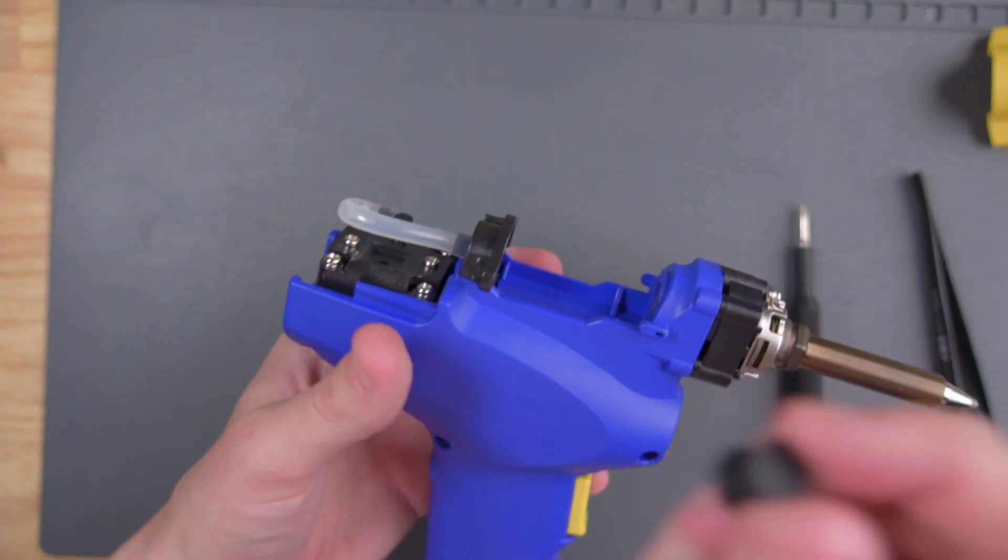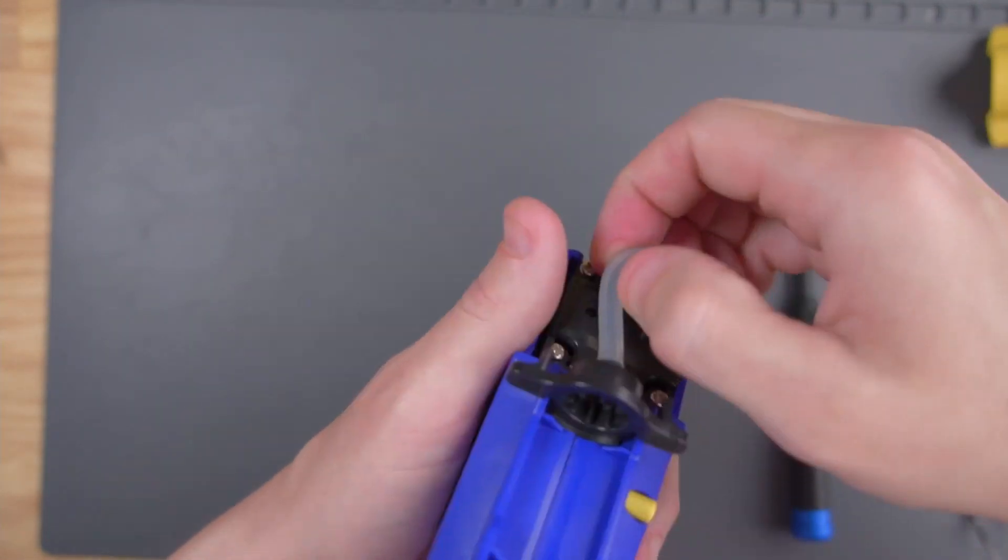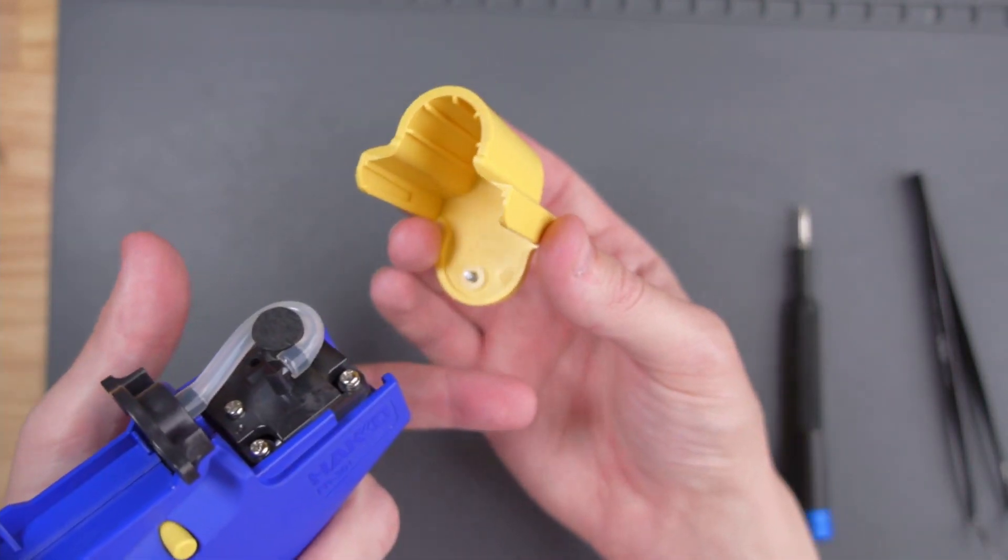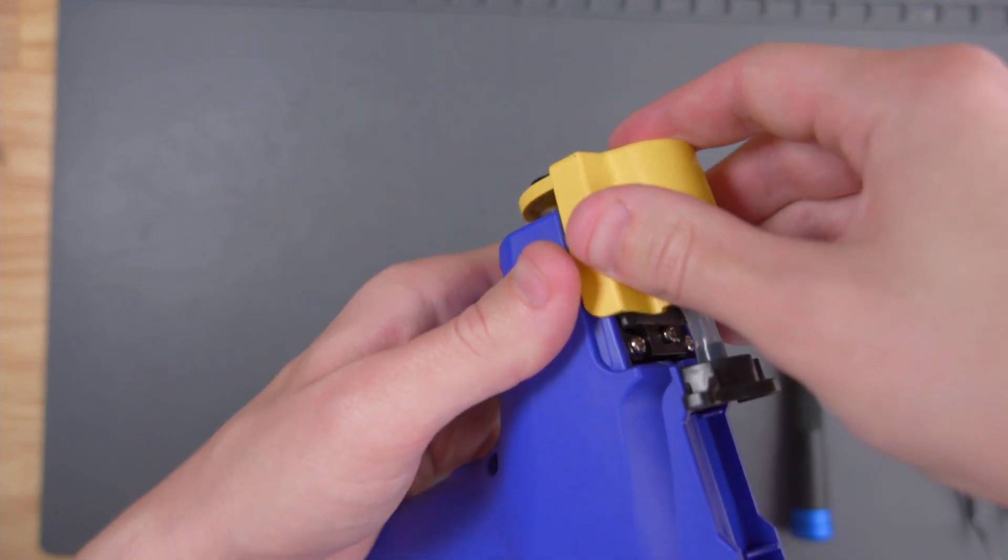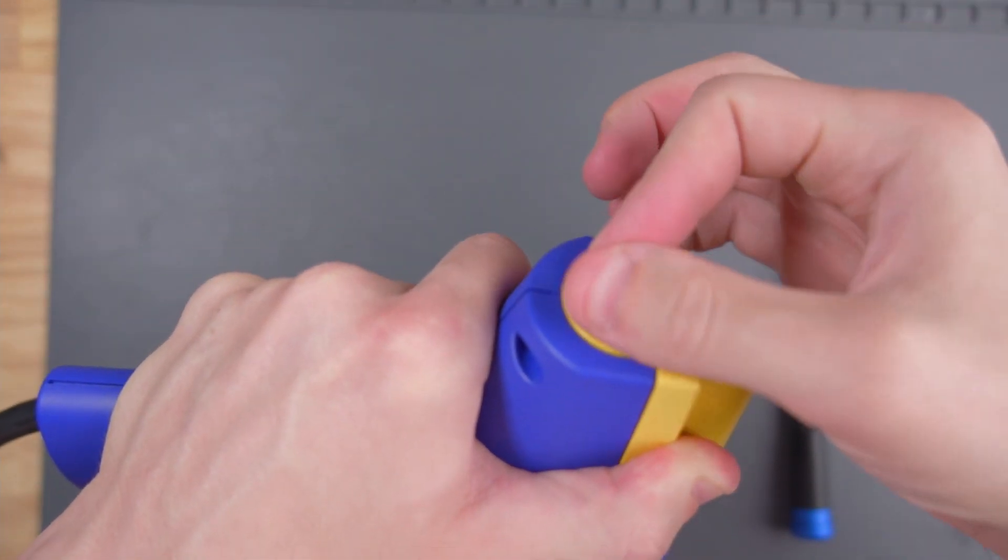Now we can put this little black piece in the spot in the tube here. I think it just acts as a strain relief. Then we'll put the yellow piece on and screw it in.